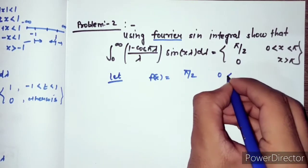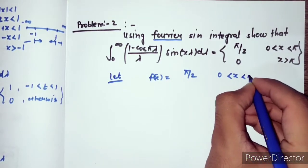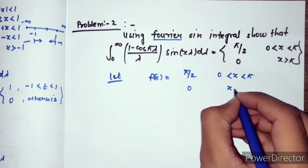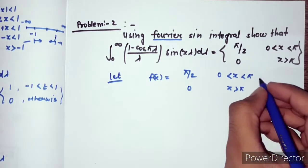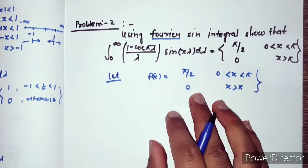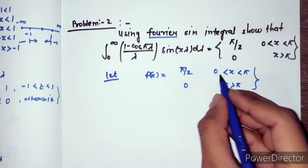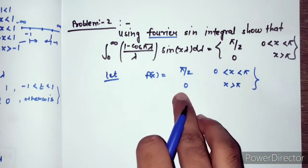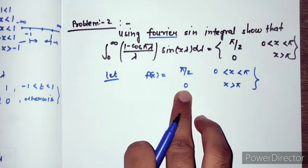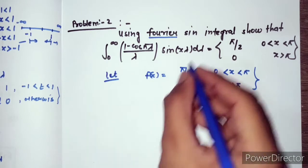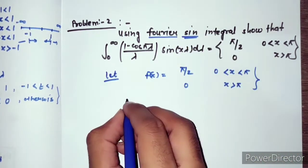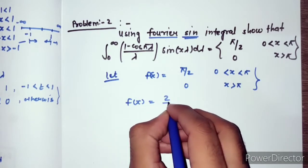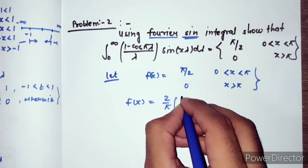The conditions are: f(x) = π/2 when 0 < x < π, and f(x) = 0 when x is greater than π. This means the limit on x is from 0 to π; otherwise the limit gives 0. By the sine formulas, already discussed, we write f(x) as a Fourier sine integral.